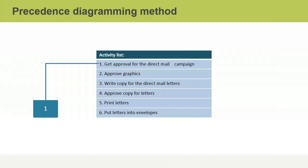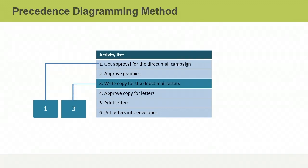To begin, you add a node to represent the first activity, which in this example involves getting approval for a direct mail campaign project. Next, you represent each activity that's dependent on the activity that comes before it. In the direct mail campaign, all activities depend on the first one, but graphics don't need to be approved before copy is written.